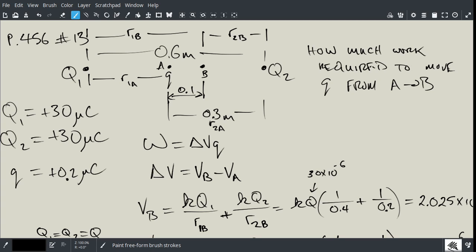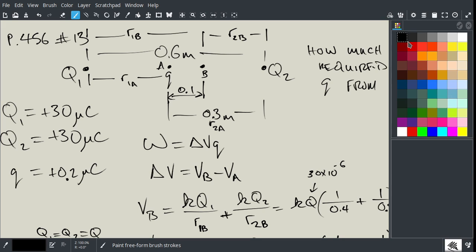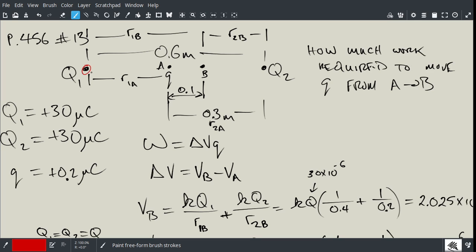Okay, so this is question number 13 on page 456, electric potential. What we have in this situation—let me change colors so I can annotate here—we have a charge here Q1, another charge here Q2, and a charge in the middle, this is small q. The values are here: Q1 and Q2 are the same, both positive 130 microcoulombs, and the small charge in the middle is positive 0.2 microcoulombs.